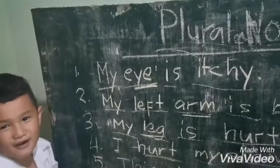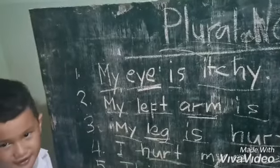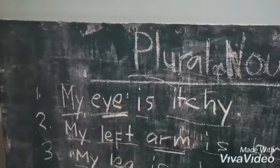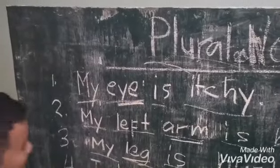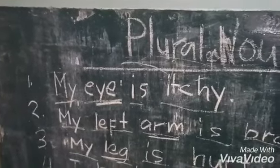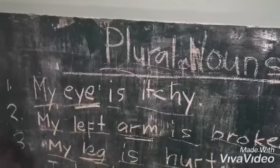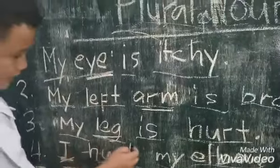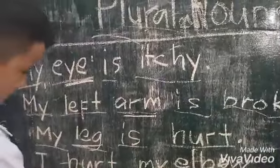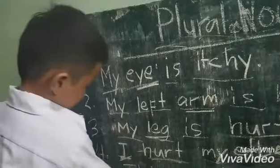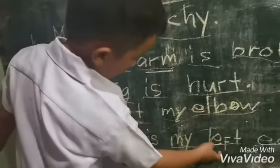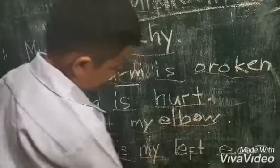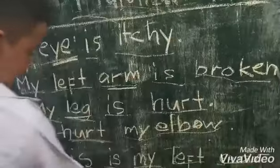First, we start with singular. My eye is itchy. My left arm is broken. My leg is hurt. I hurt my elbow. Number five: this is my elbow. This is my left ear.